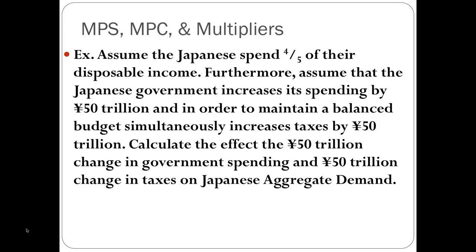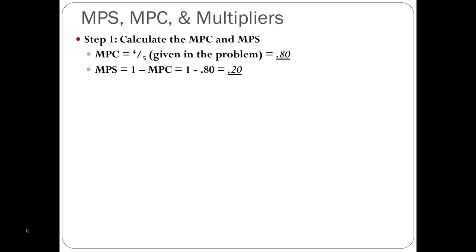The first thing is to find MPC and MPS. The Japanese spend four-fifths of their disposable income, so our MPC is 0.8. Our MPS is 1 minus MPC, which is 1 minus 0.80 = 0.20. So our MPC is 0.8 and our MPS is 0.2.